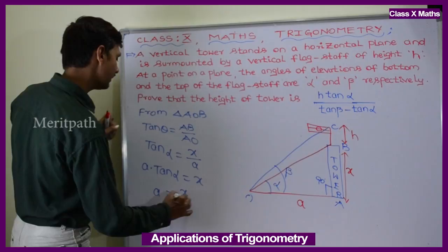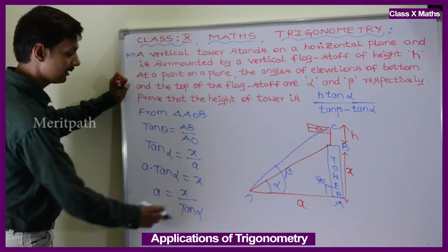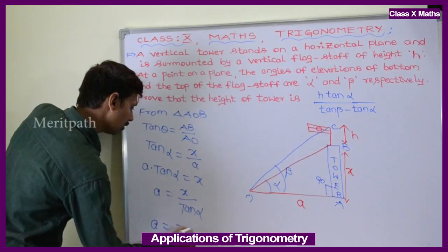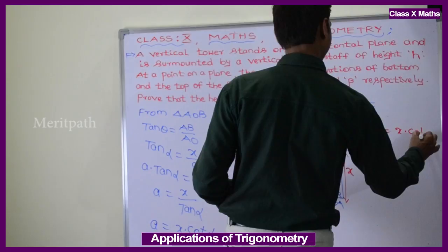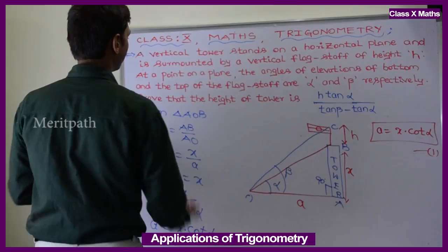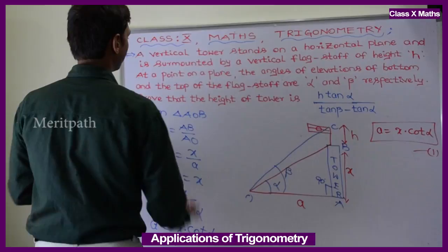So from triangle AOB we got the first equation: a = X·cot α. Let us now take triangle AOC to get a second equation.